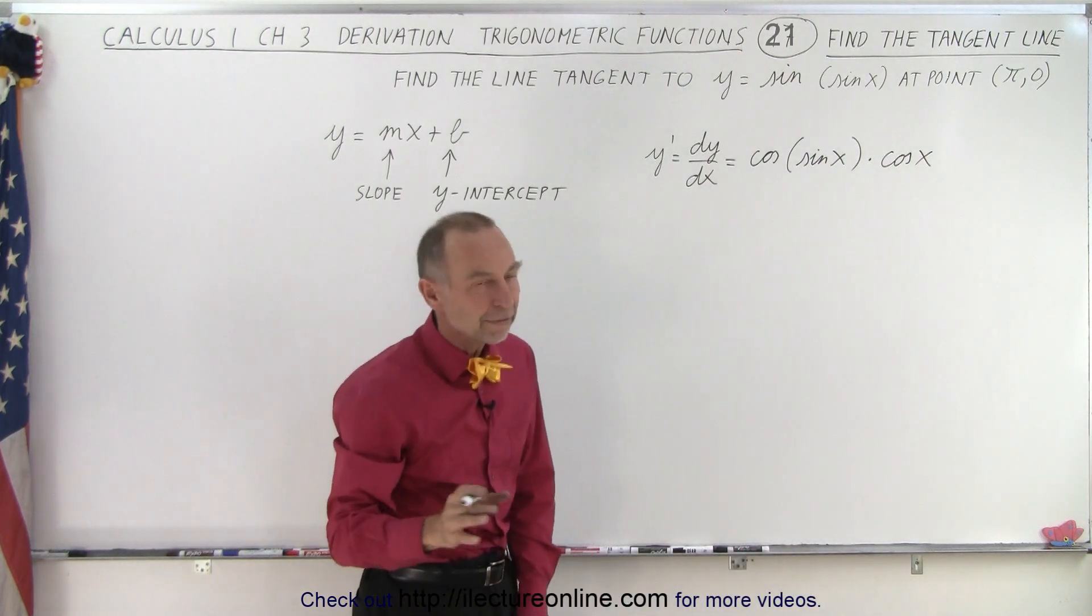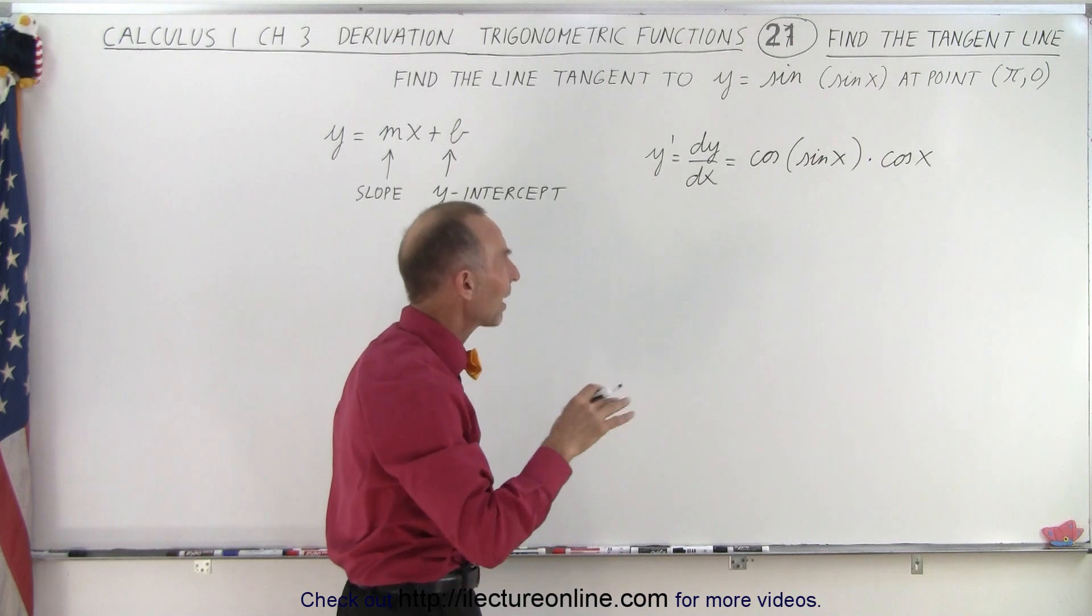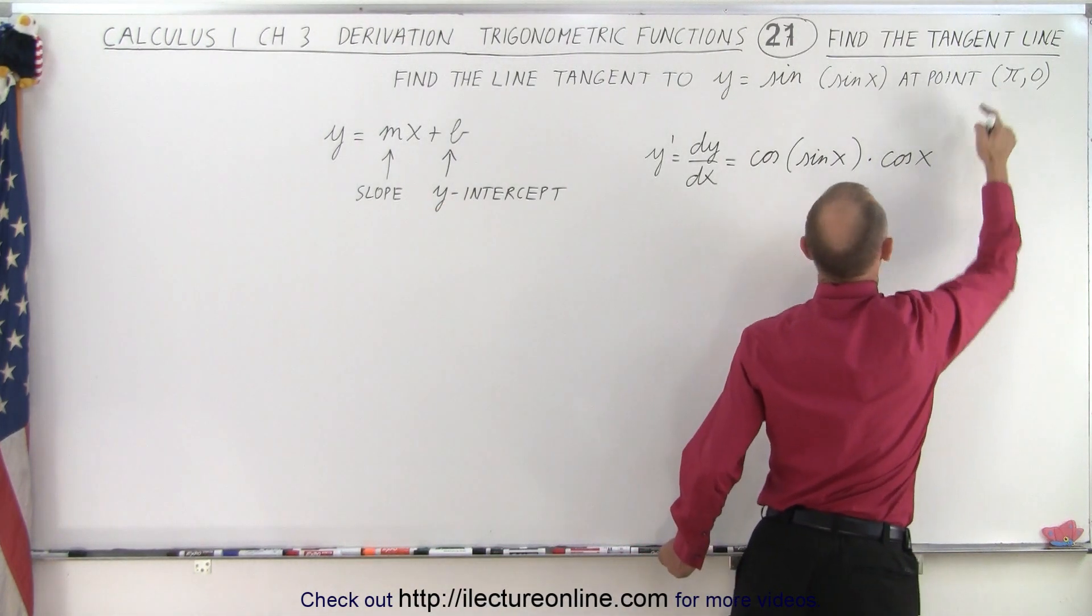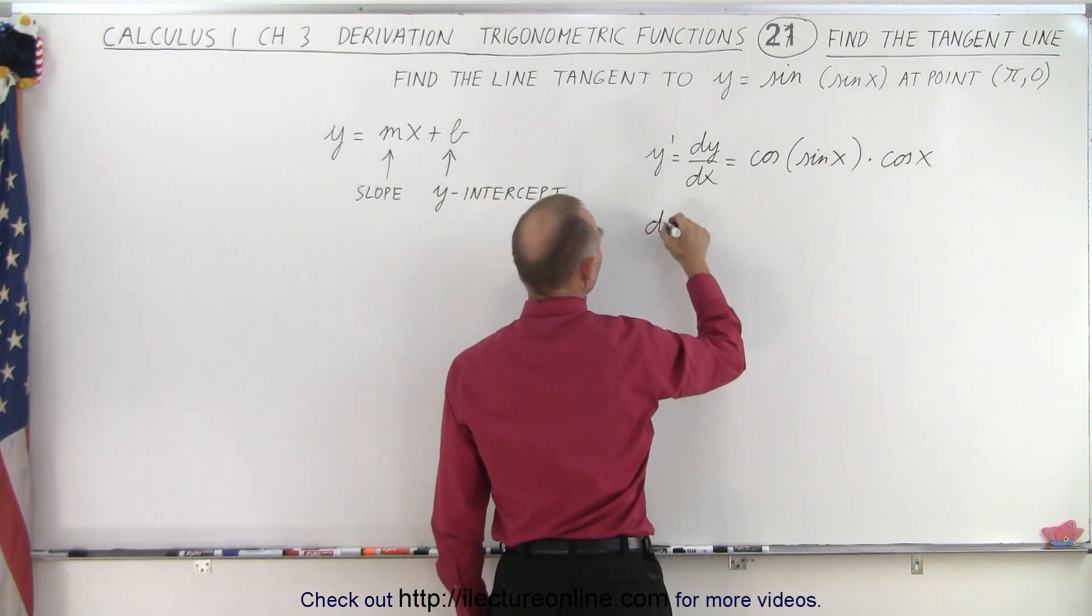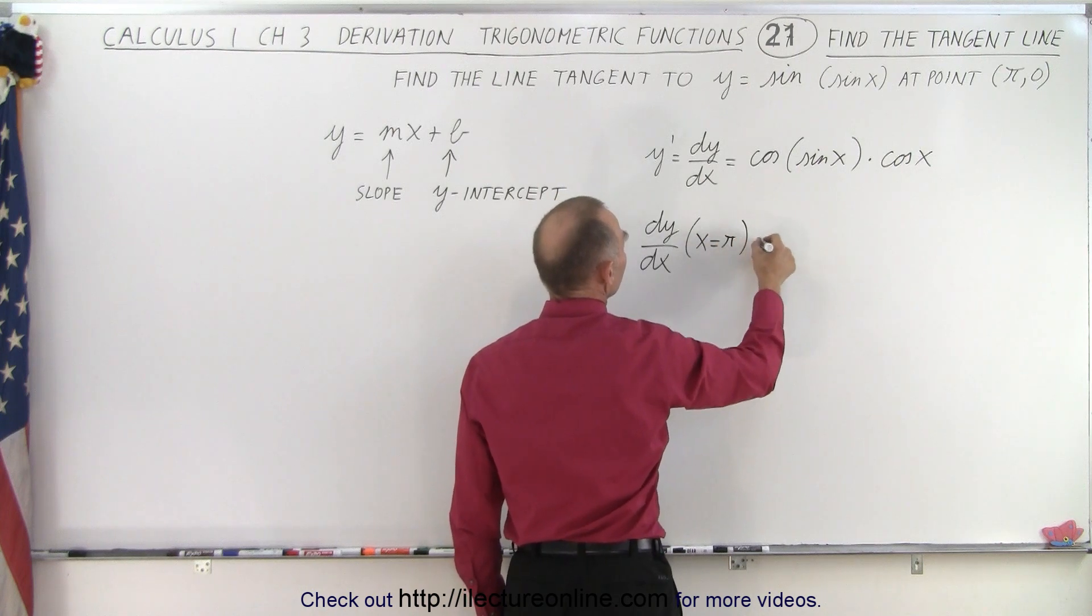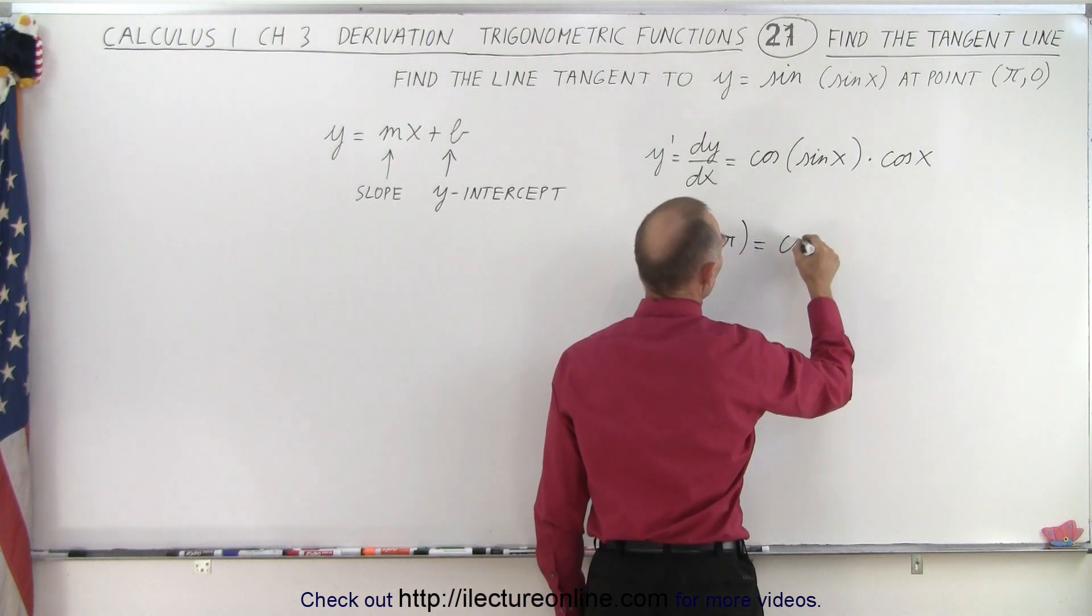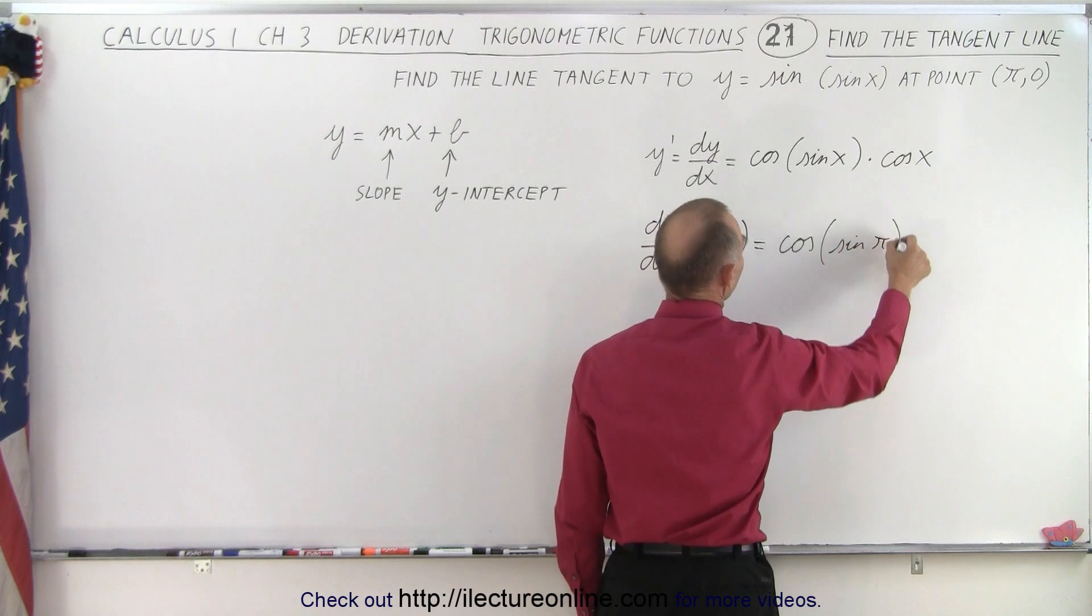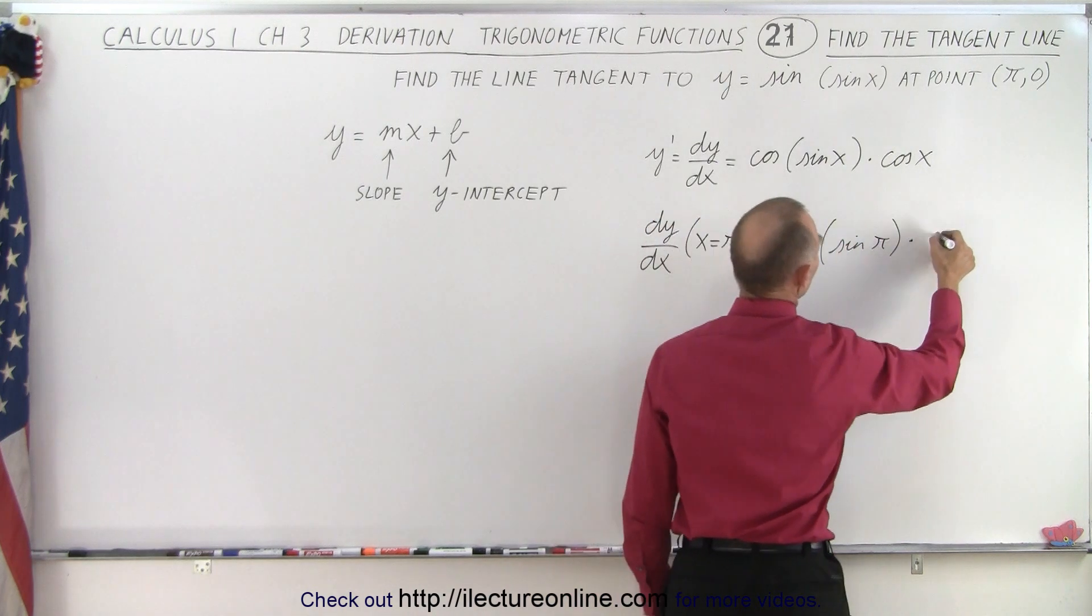So there's the derivative of the function. Now we're going to evaluate the derivative at the value of x equals pi. So dy/dx when x equals pi is equal to the cosine of the sine of pi times the cosine of pi.